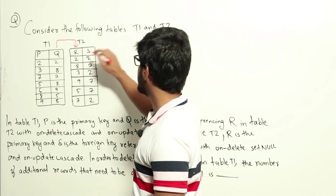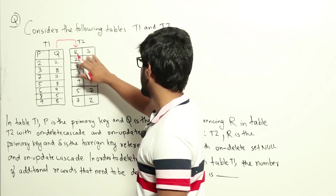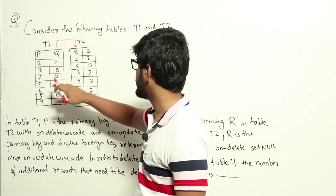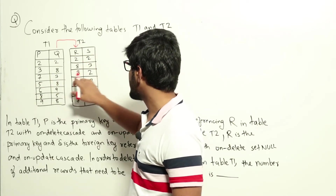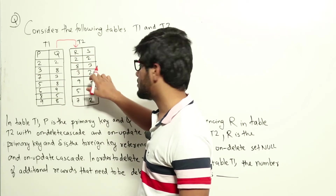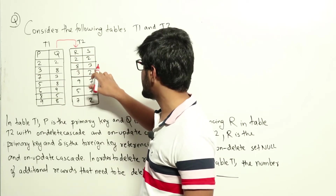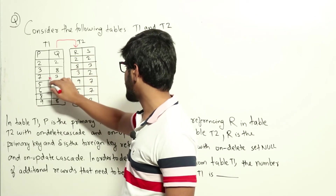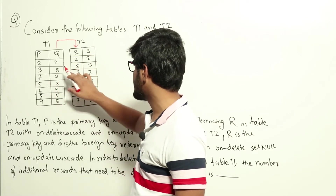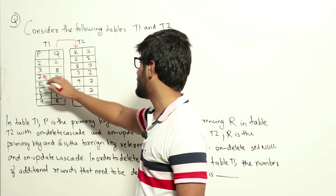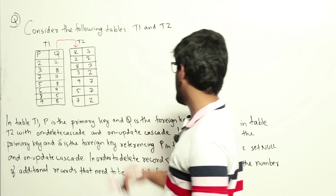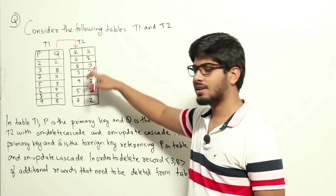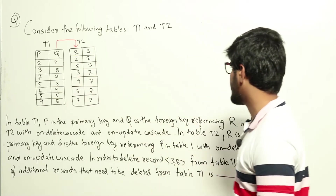This means if something in T2 is deleted, we need to cascade the deletes. For example, if you are deleting row (3,2) from table T2, then we need to delete whoever is referencing 3. So row (7,3) is referencing 3 here, and (7,3) will have to be deleted. That is ON DELETE CASCADE. ON UPDATE CASCADE means whenever something is updated in T2, that update also has to be cascaded in T1.